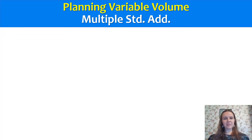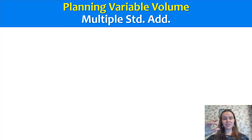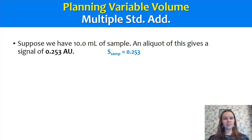The first example will be variable volume. To plan a variable volume standard addition, it means you start with your original sample, add a small volume of a highly concentrated standard, and keep adding that small volume of the highly concentrated standard over and over again — therefore the volume slightly increases with each addition, which is called the variable volume. So let's suppose we have 10 mils of sample. You take a portion of it, measure it using your instrument, and get a signal of 0.253 arbitrary units.